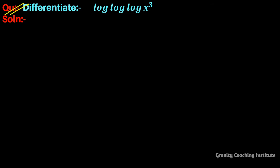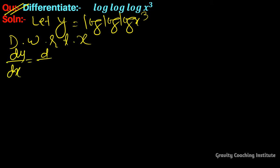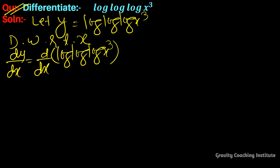Differentiate log(log(log(x³))). Let y equal to log(log(log(x³))). Differentiate with respect to x, so dy/dx equals d/dx of log(log(log(x³))).